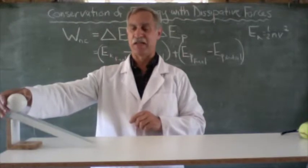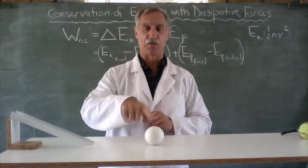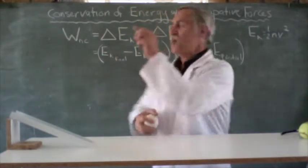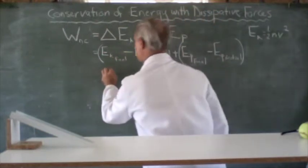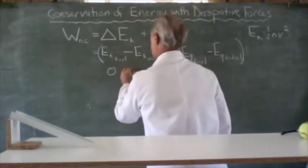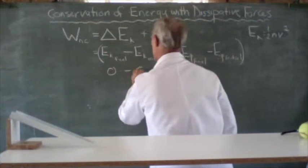EK becomes zero. So if it's not moving, it's got zero kinetic energy. And when it ends, it's not moving, so it's got zero. So what is the final kinetic energy? Zero. Minus what's the initial kinetic energy? Zero.